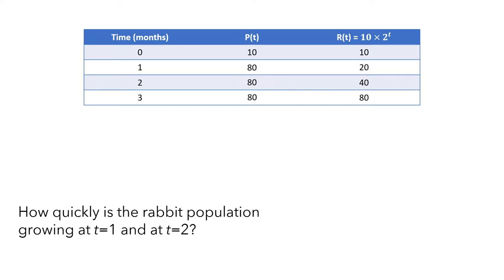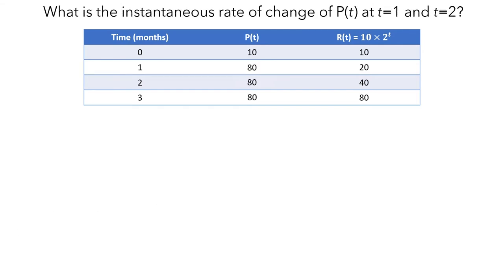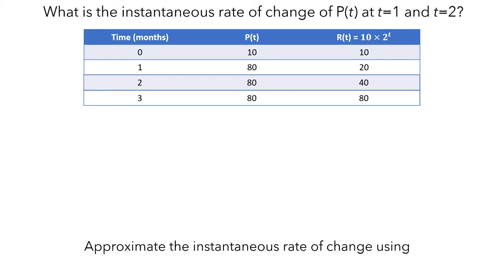So what are we trying to figure out? When we're asking how quickly the rabbit population is growing at t equals 1 and t equals 2, we're asking: what is the instantaneous rate of change of p at t equals 1 and t equals 2? Let's first investigate the instantaneous rate of change at t equals 2 months. The strategy is to approximate the instantaneous rate of change using average rates of change over small time intervals.